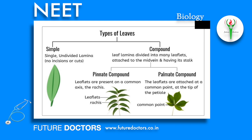Simple and Compound Leaves: A simple leaf has a single or undivided lamina. An axillary bud is always present in the axil of the leaf petiole and stem. The lamina can have various types of incisions which may reach up to half, more than half, or near the base or midrib. In a compound leaf, the incision of the blade goes down to the midrib and the leaf is broken up into segments called leaflets. A bud is present in the axil of the petiole in both simple and compound leaves.